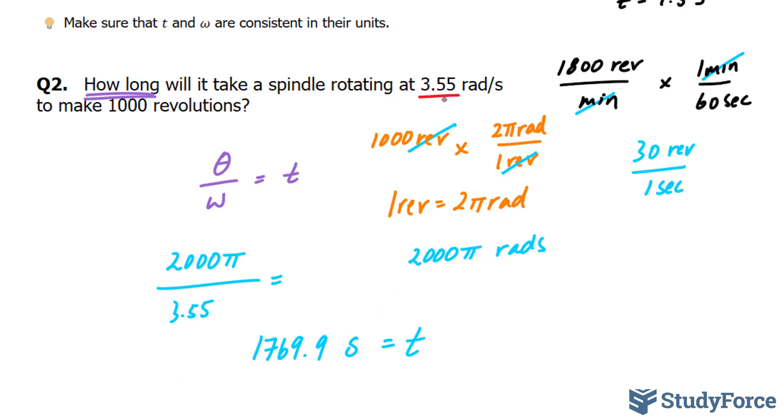And because we have three significant figures here and four significant figures here, we should have an answer with three significant figures. So we would have to round this to 1,770 seconds. This consists of three significant figures, and that's your final answer.